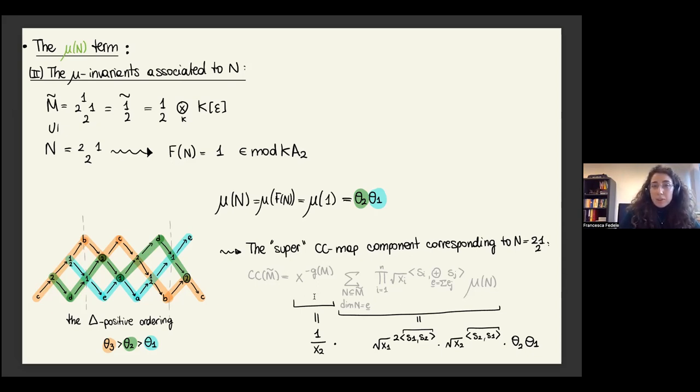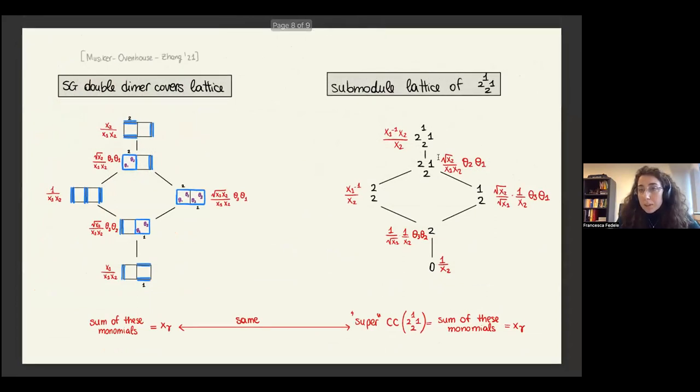The super CC map component corresponding to this submodule, well this part is the same for each submodule, it's just a size of sum. Then we use this formula to compute the component corresponding to N, which uses this bilinear form depending on the dimensions of extension spaces of simples basically, and then this mu of N. Once you compute all of this, this is minus one and this is one, so you end up saying that the component corresponding to this submodule is this component here.